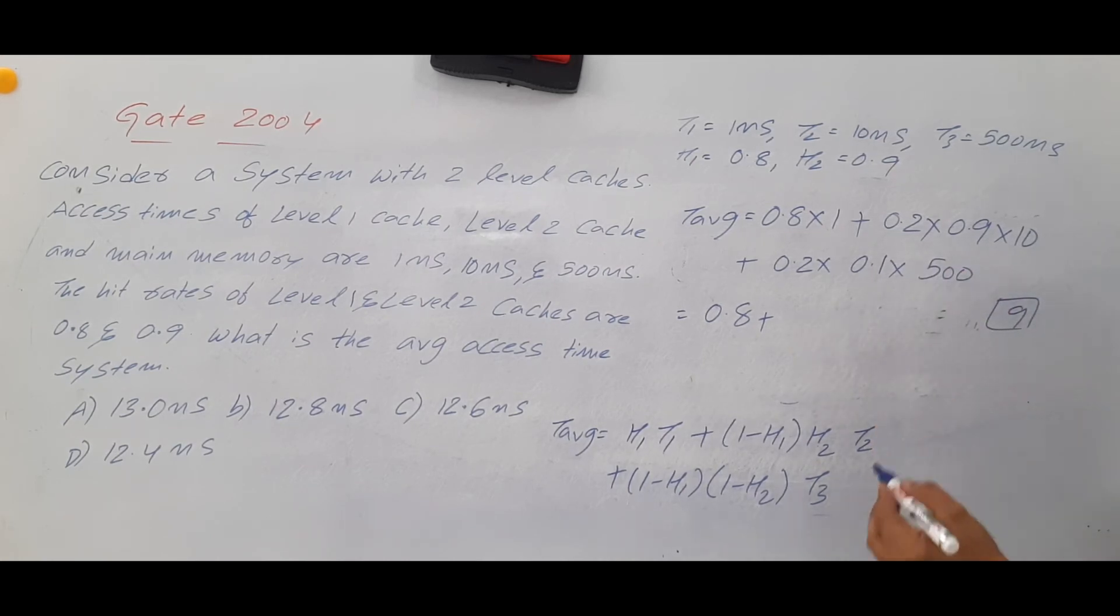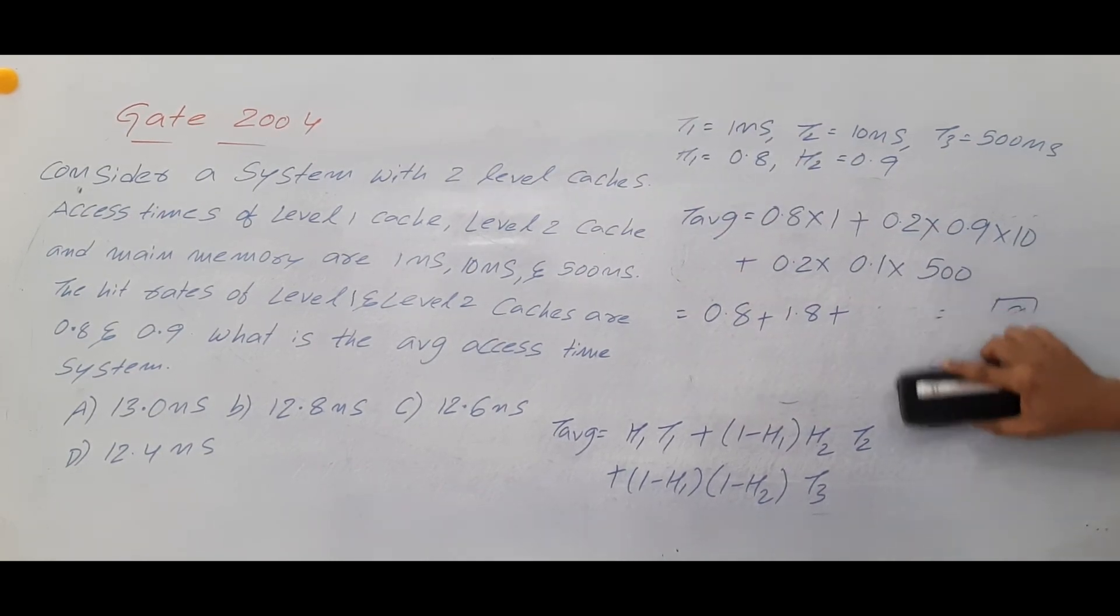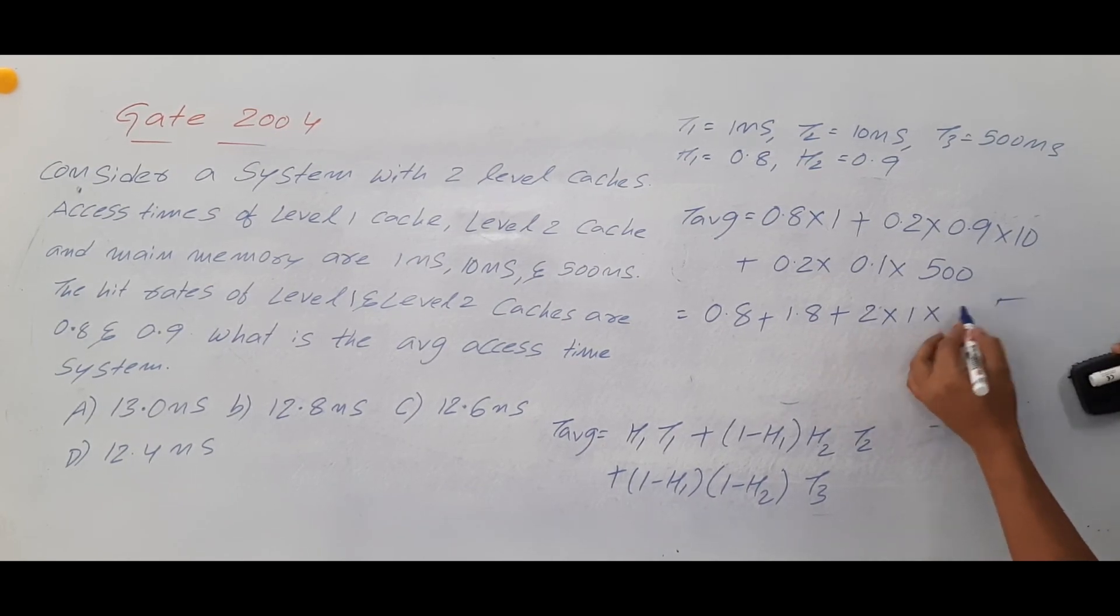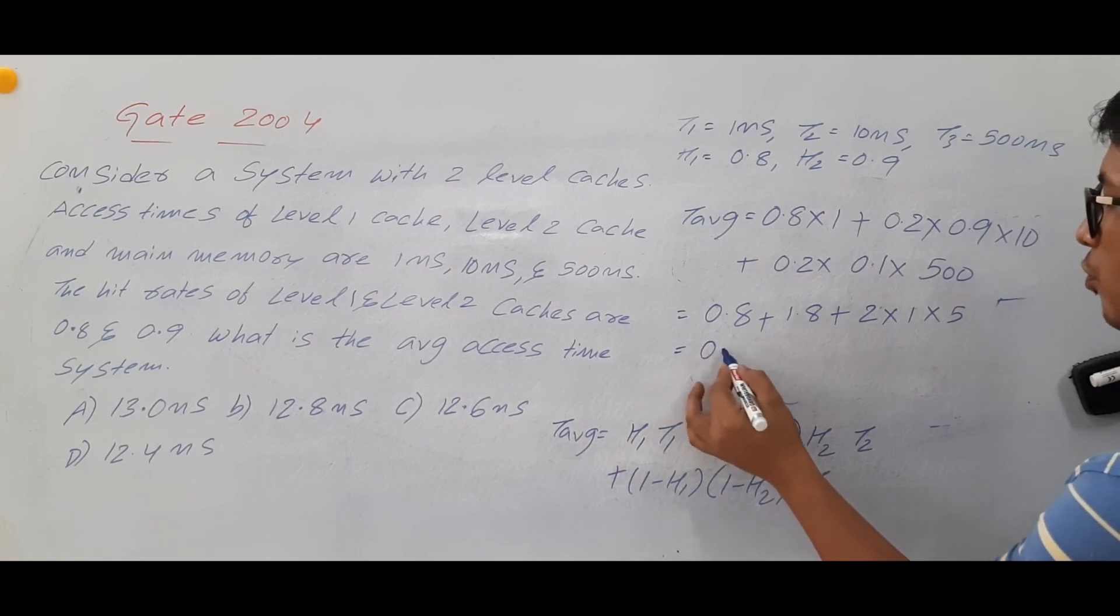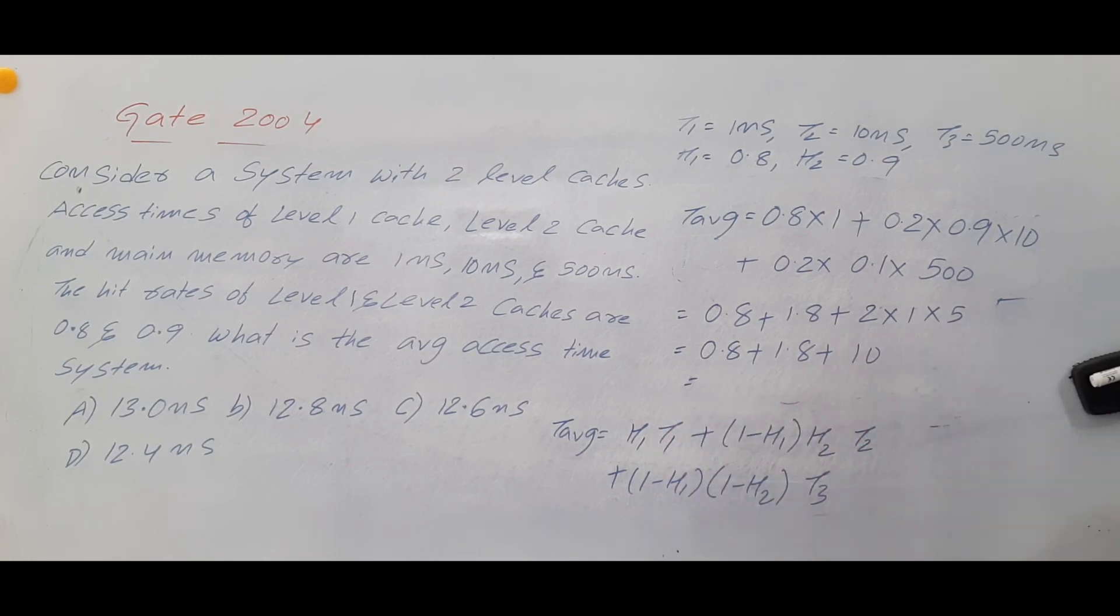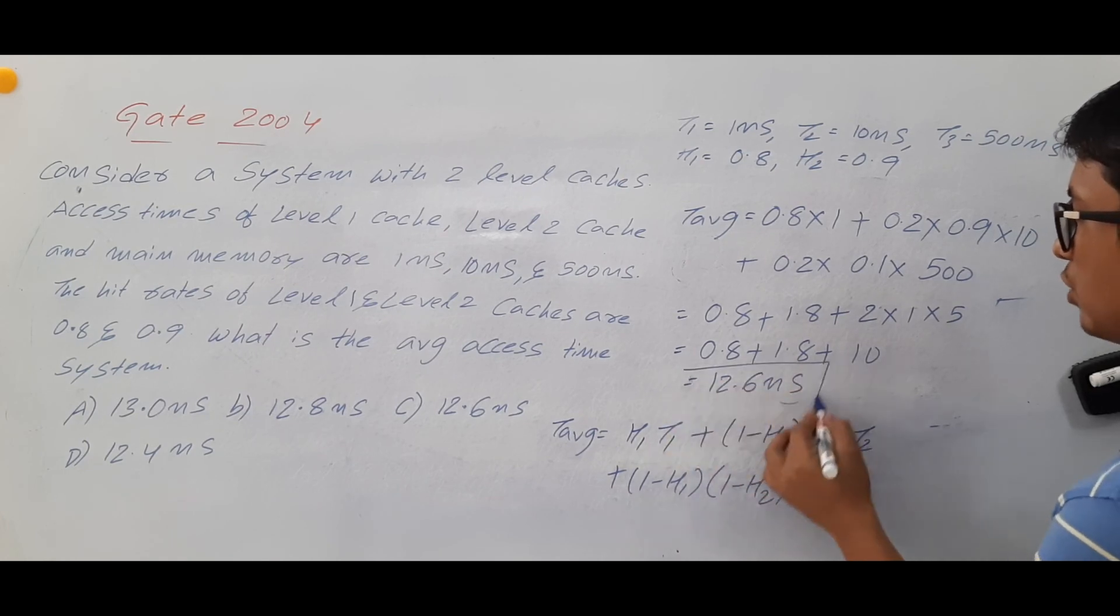If you consider this one 0.9 into 10 is 9. 9 into 0.2 you will get it as 1.8. If you have any doubt 9 into 2 is 18, if you divide by 10 you will get 1.8 plus 0.2 into 0.1 into 500. So 0.2 into 1 into 5 you will get. Because with this 0 I can make this one as 2. With this 0 I can make it as 1. So 2 into 1 into 5. So you will get 0.8 plus 1.8 plus 10 which is equal to 11.8 plus 0.8 you will get 12.6 nanoseconds.